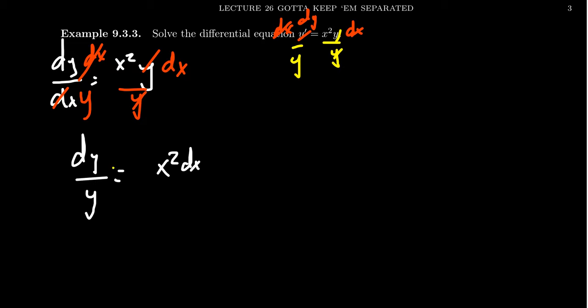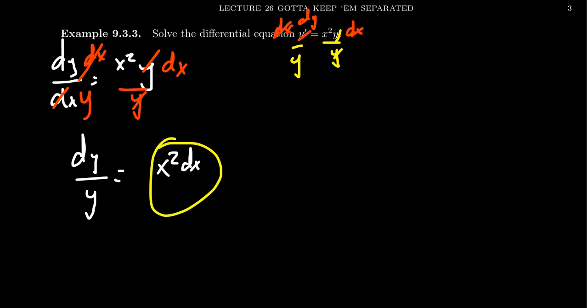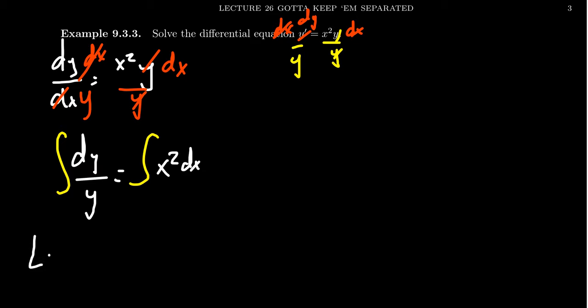Once the variables are separated, integrate with respect to the variable on each side. On the left-hand side, we integrate 1 over y with respect to y — that gives us the natural log of the absolute value of y; don't forget the absolute value. On the right-hand side, we integrate x squared with respect to x, giving us x cubed over 3 plus a constant. Now we're going to solve for y. Since this example has no initial value, we just want the general solution.